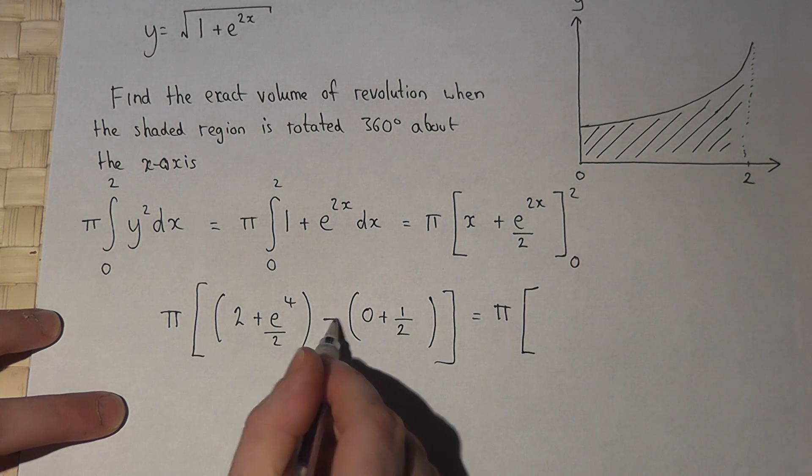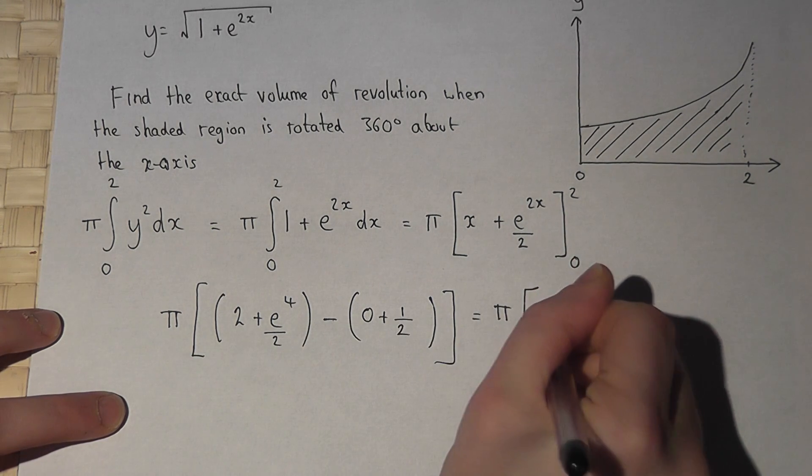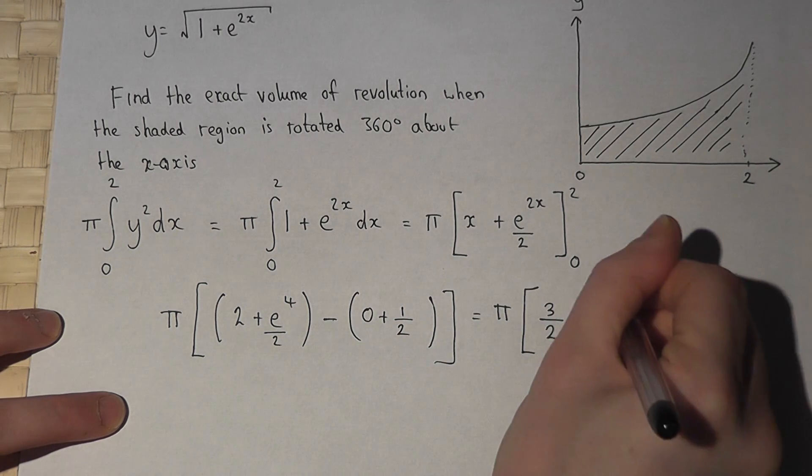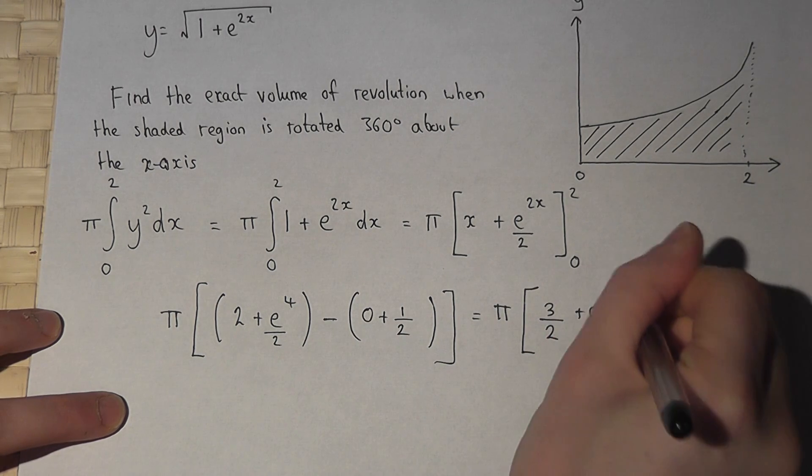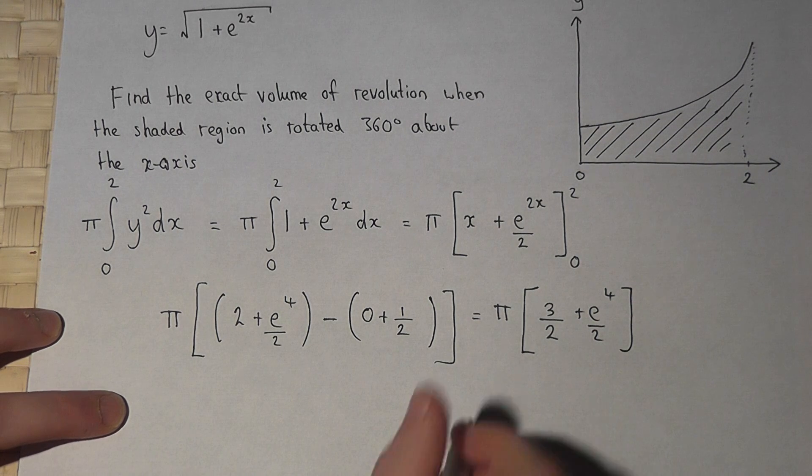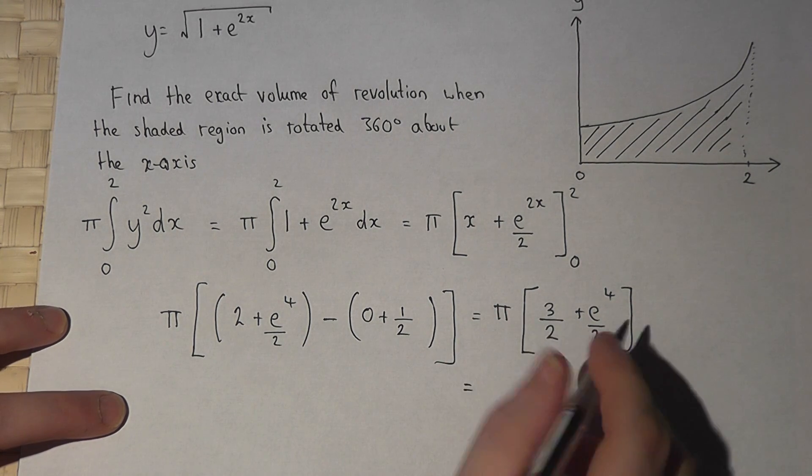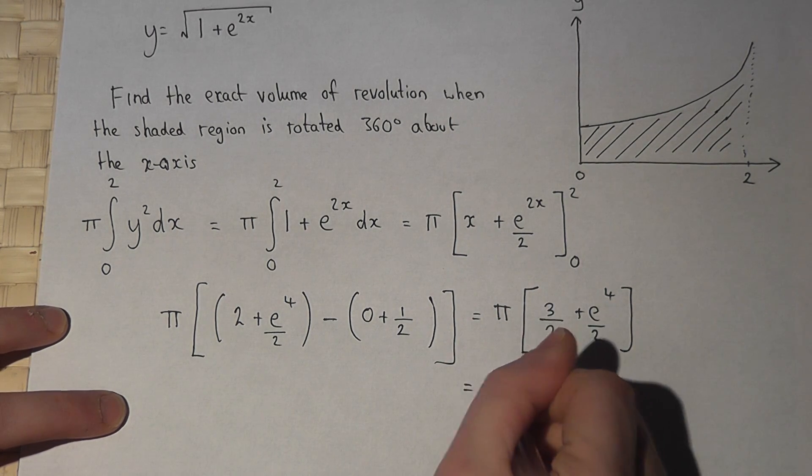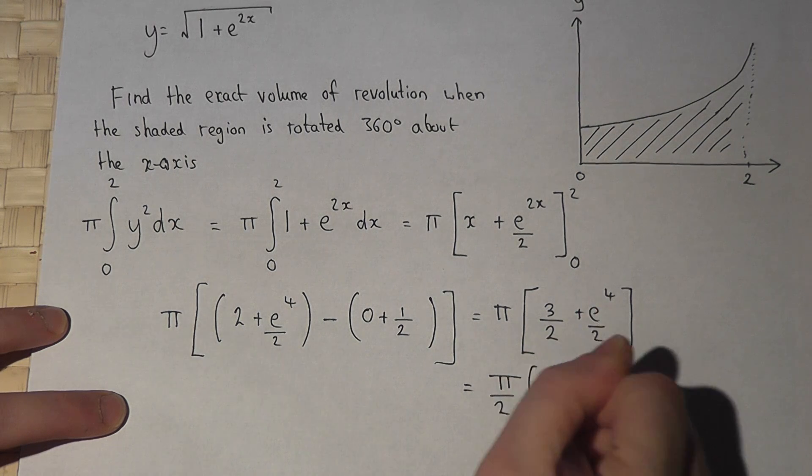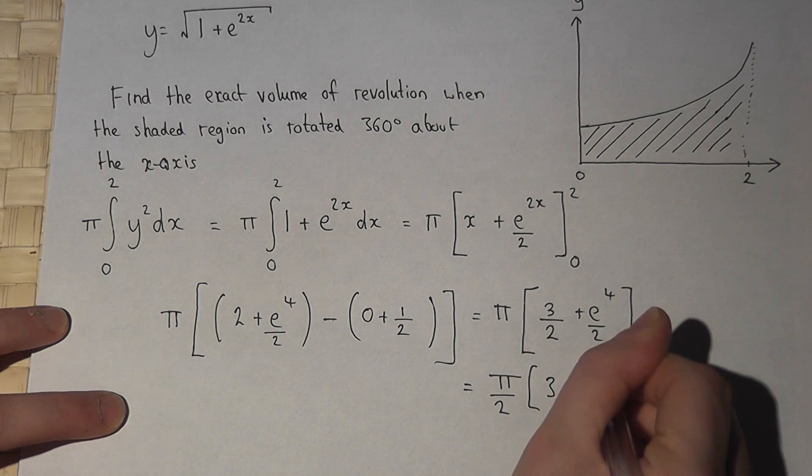2 take away a half is 3 over 2, plus e to the power of 4 over 2. To finish off, I can pull out the half as a factor, so pi over 2 brackets 3 plus e to the power of 4.